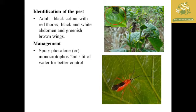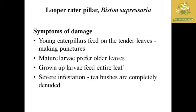The identification of this pest: the adult is black in color with a red thorax, a black and whitish abdomen, and greenish-brown wings. The management is spraying of phosphamidon or monocrotophos at 2 ml per liter of water for better control of the tea mosquito bug.